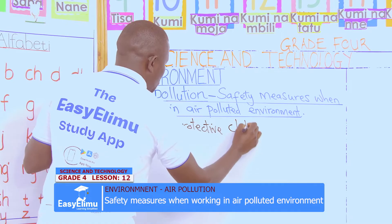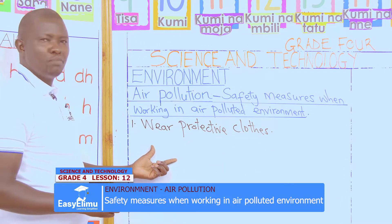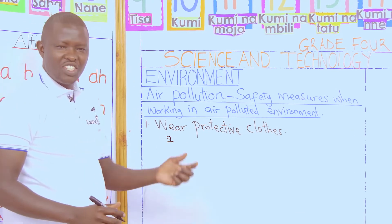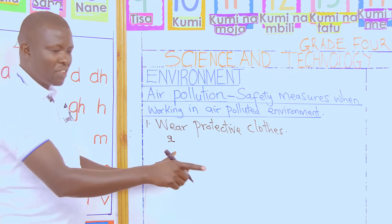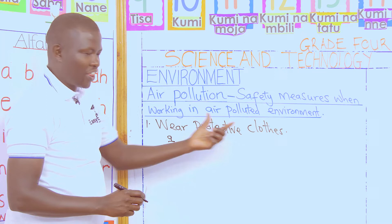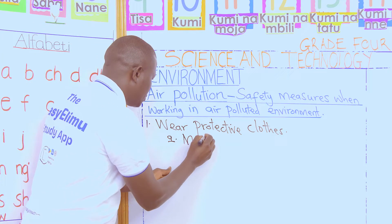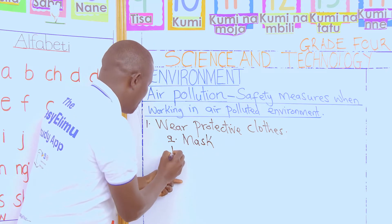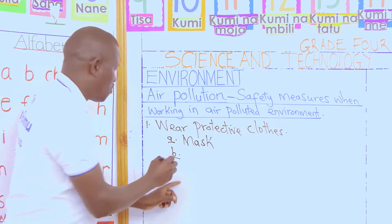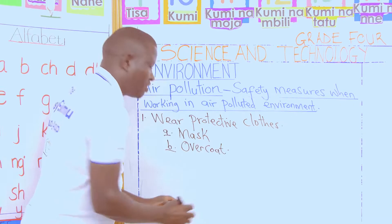The clothes which have been worn here are as follows. John, can you name one cloth which has been worn by the people in the pictures? A mask is part of our protective gear — so we have mask. Jen, what else can you see? Overcoat. Correct.